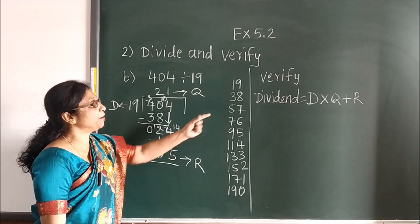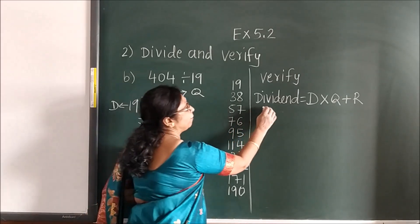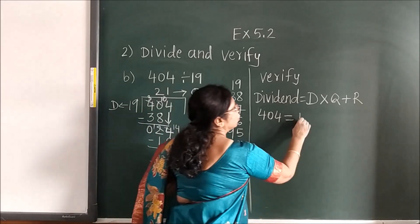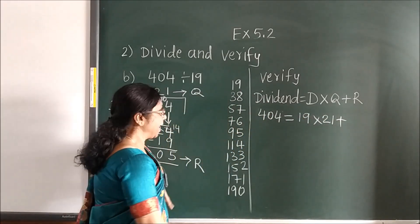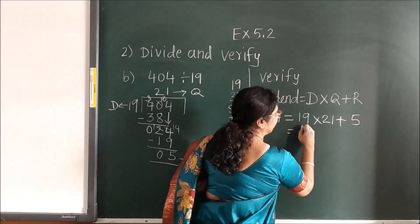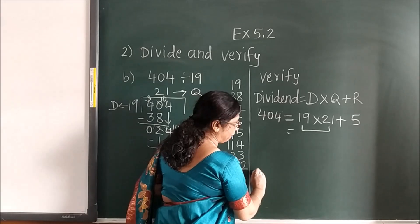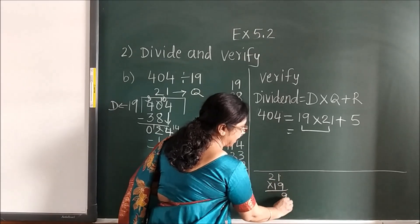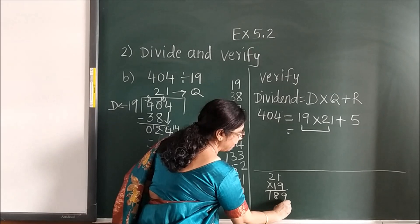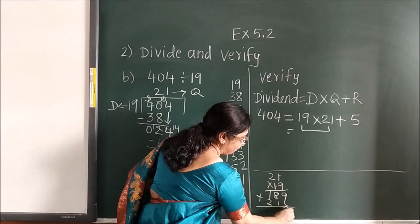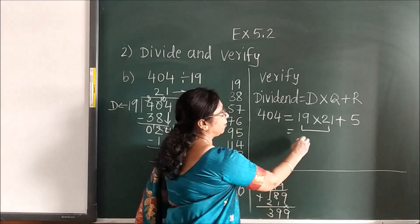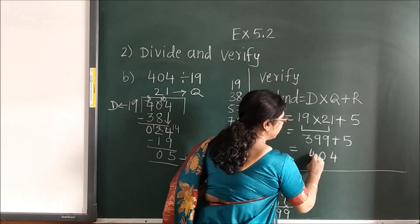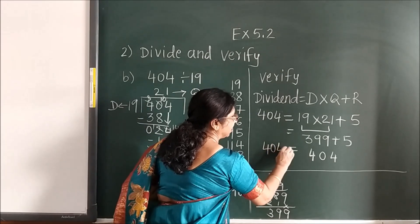To verify, you have to use the formula. Dividend is 404, divisor is 19, quotient is 21, remainder is 5. Multiply 21 by 19: 9 ones are 9, 9 twos are 18. Then 1 one is 1, then 2. When you add: 9, 9, 3. So write 399 plus 5 — you get 404. That means LHS is equal to RHS.